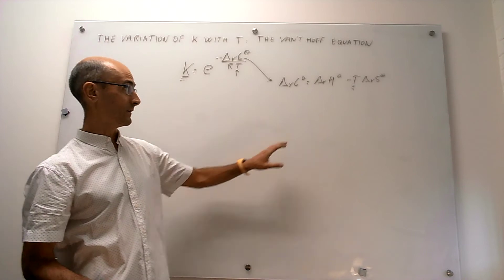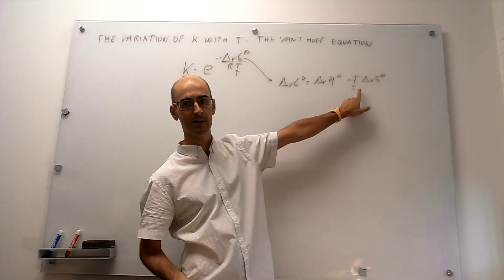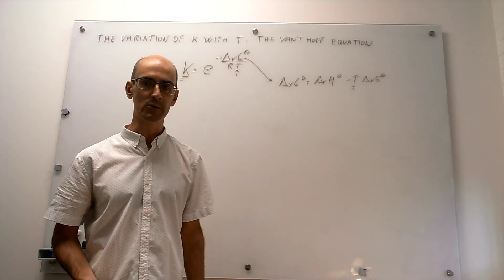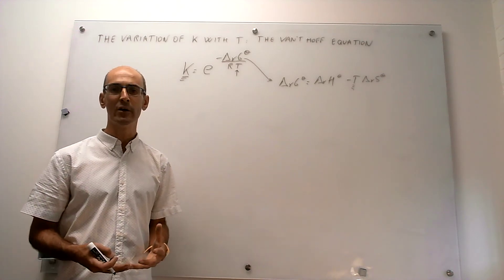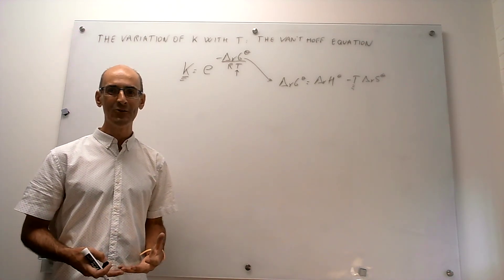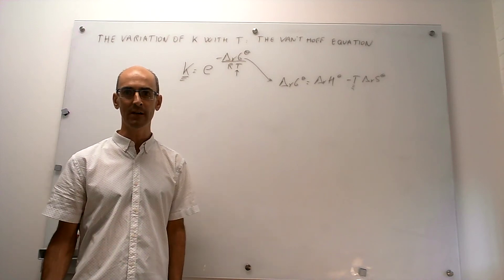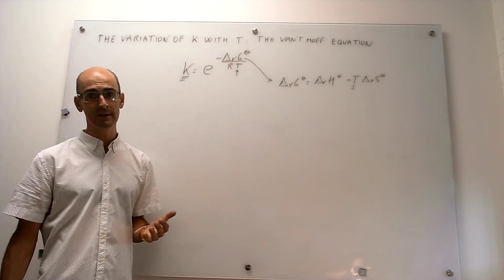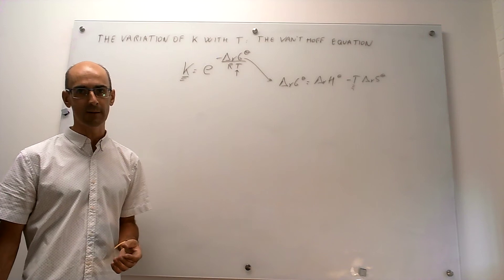Notice that the enthalpy depends on temperature, the entropy depends on temperature, and of course you have an explicit dependence on temperature here, so that value clearly does depend on temperature as well. The question then is, is there a compact way to calculate how the equilibrium constant changes with temperature? And the answer is yes, this is not difficult to do. This is done by the Van't Hoff equation, which we're going to derive in the next couple of minutes.